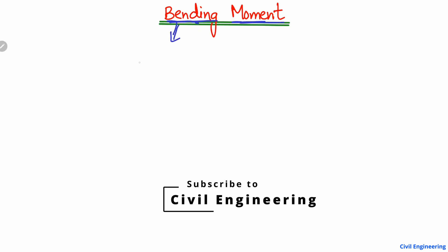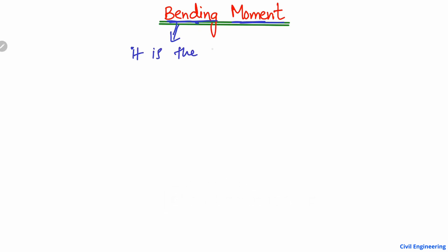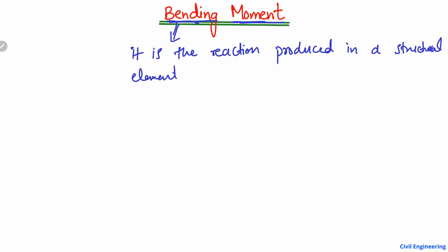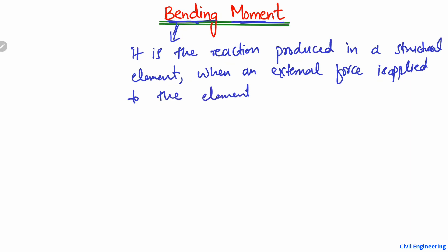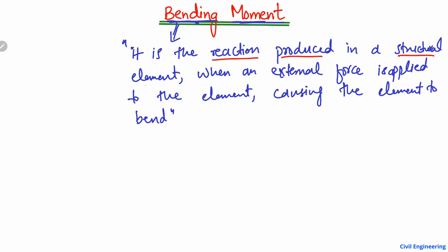A bending moment is basically the reaction produced in a structural element. This is the definition of the bending moment: it is the reaction produced in a structural element when an external force is applied to the element, causing the element to bend.